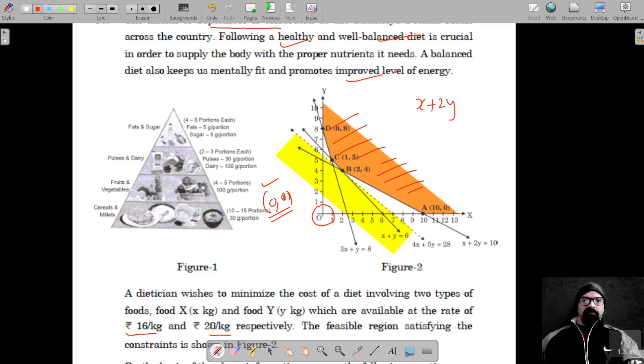First constraint should be greater than or equal to 10. Second would be x + y is greater than or equal to 6, so x + 2y ≥ 10, x + y ≥ 6. And the third one is 3x + y, so 3x + y is greater than or equal to 8.